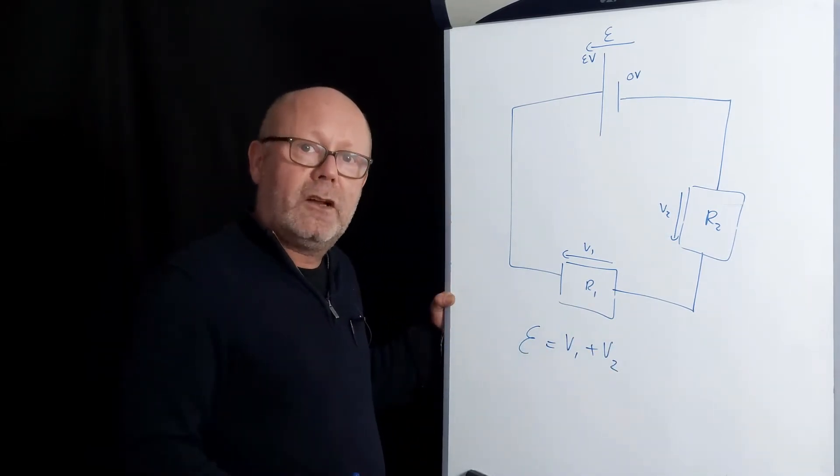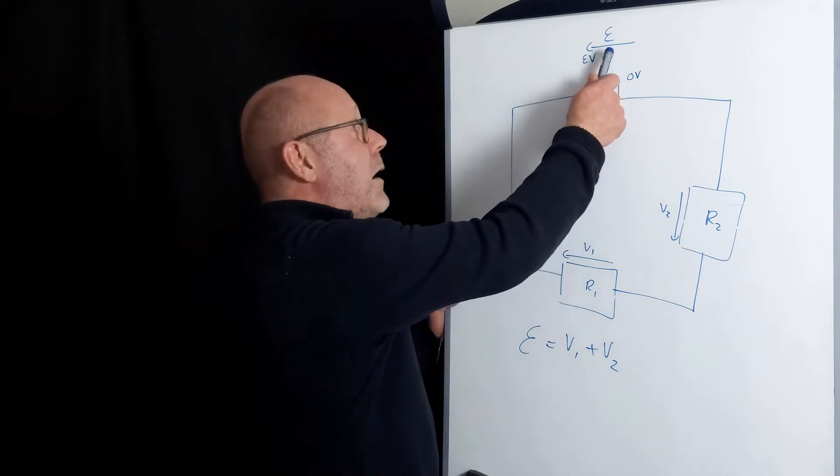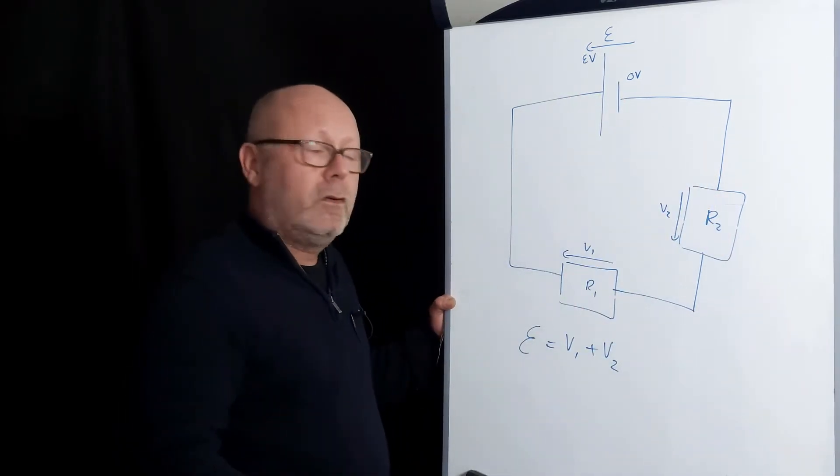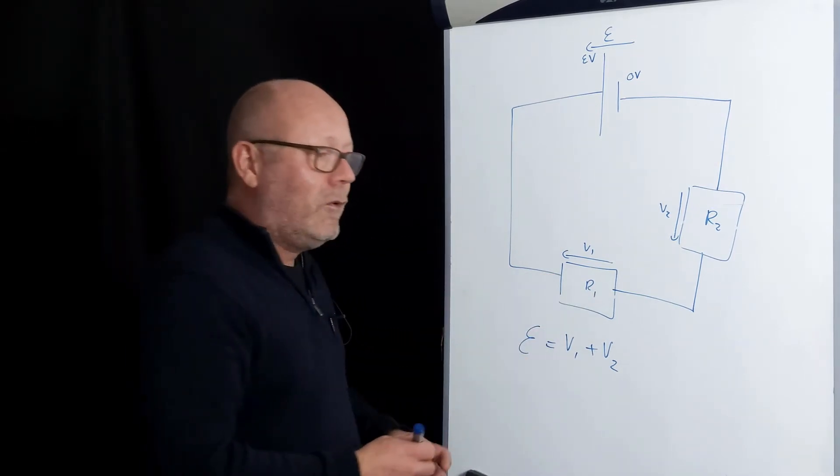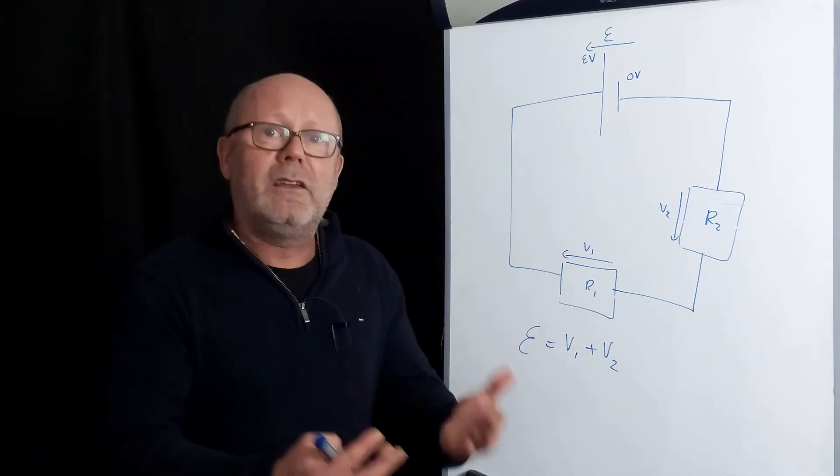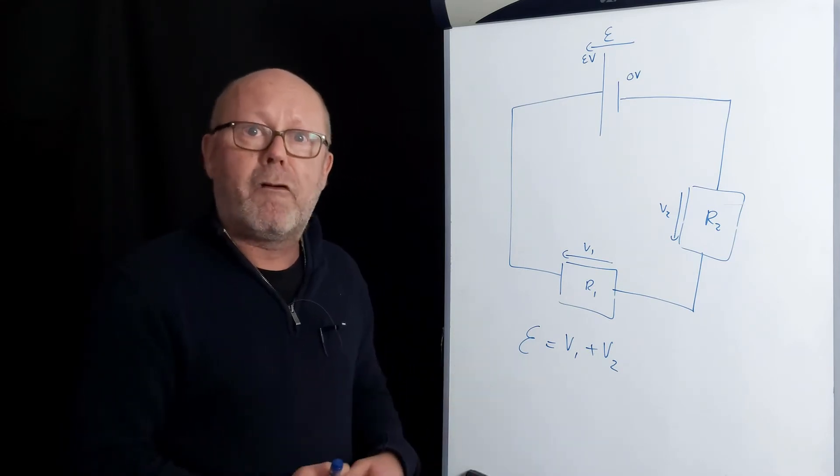That means that ε needs to be equal to V1 plus V2. This is the second law of Kirchhoff. The sum of the EMFs in a circuit loop is equal to the sum of the potential drops. A way to make it easier to view is to use what we call the loop law, which is derived from this.